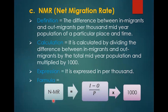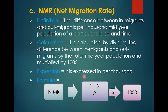The next measure is Net Migration Rate. The formula is: NMR = ((I − O) / P) × 1000, where I means in-migrants, O means out-migrants, and P means mid-year population. The difference between in-migrants and out-migrants per thousand mid-year population of a particular place and time is called Net Migration Rate. First subtract out-migrants from in-migrants, divide by mid-year population, and multiply by 1000.